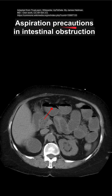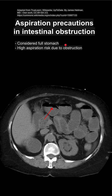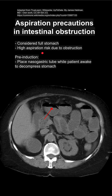These are aspiration precautions in patients with intestinal obstruction. Patients with intestinal obstruction are considered full stomach and are at high aspiration risk due to that obstruction. You have an obstruction and things back up behind it, making you at high risk for nausea, vomiting, and aspiration, especially if you are going to induce and intubate.